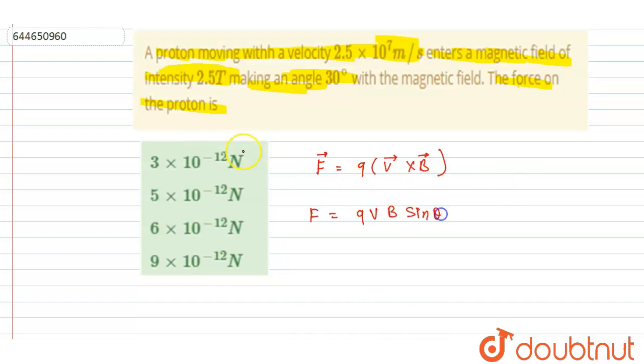Right, so if you see this is a proton and we know that the charge on one proton is e. The charge q here equals e, which is 1.6 times 10 to the power minus 19 coulombs. Velocity is already given, magnetic field intensity is this, the angle between the velocity vector and magnetic field vector is 30 degrees.